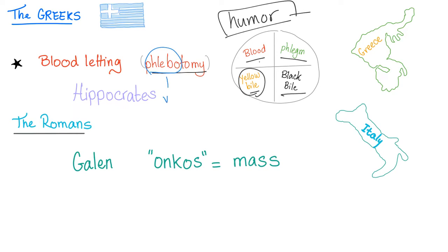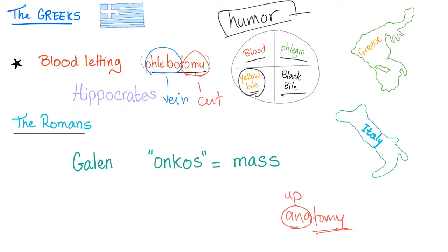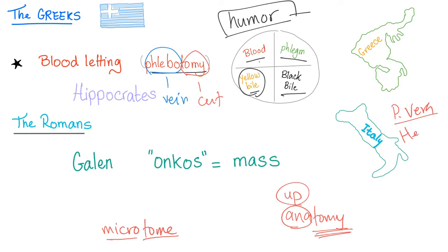Phlebo means vein, and tomy means to cut. That's why the word anatomy means to cut — tomy means cut and ana means up, so anatomy literally means to cut up. That's why we have the word microtome: a device that cuts tissue into slices. Micro because it's very small. Today, do we use phlebotomy? Very rarely — such as in polycythemia vera and hemochromatosis.